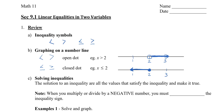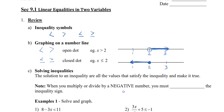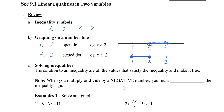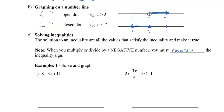When we're solving inequalities, the solution to an inequality are all the values that satisfy the inequality and make it true. When you multiply or divide by a negative number, one of the things you must remember to do is reverse the inequality sign. We're going to solve some single variable inequalities first.